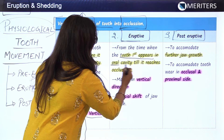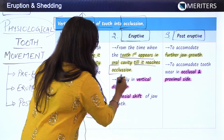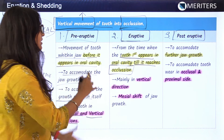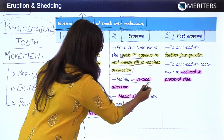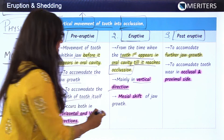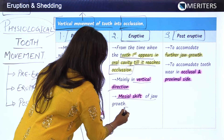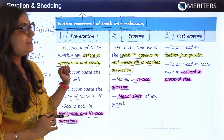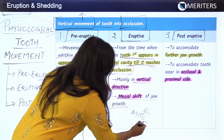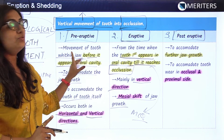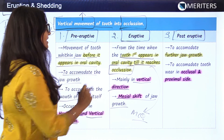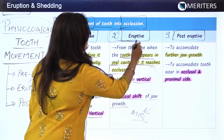The second stage is the eruptive stage. In this stage, the tooth first appears in the oral cavity until it reaches occlusion — the position where it will occlude with the opposite arch tooth. Here, movement is mainly in the vertical direction, and a mesial shift may also be seen due to jaw growth. This is an important MCQ point: in which stage does the tooth first appear in the oral cavity? It is the second stage, the eruptive stage.